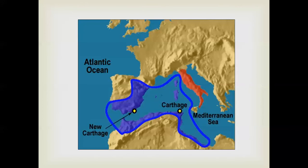Carthage had been, at one time, the greatest trading city — a province of the Phoenicians, who were a great trading state from the Middle East, from what is now Lebanon, parts of Syria, and even Israel. Carthage grew out of that and was the closest dominant trading state in the region. They saw Rome as a threat to their economic strength and well-being. A series of three wars were fought between the Romans and the Carthaginians, known as the Punic Wars.